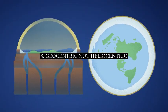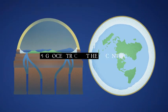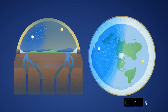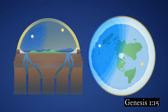5. Geocentric, not heliocentric. According to Scripture, the sun, moon and stars are not millions of miles away, but are simply lights in the firmament of the heaven.